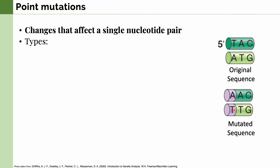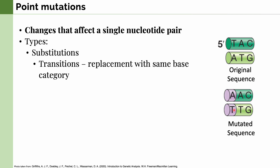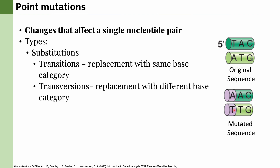There are two types of point mutations. The first ones are called substitutions, and we can further classify them into transitions and transversions. Transitions mean that the replacement nucleotide is of the same base category — so if a purine is in the original sequence, it is replaced by another purine. In transversions, the replacement is done with a different base category, so a purine is replaced by a pyrimidine. For the full list of pyrimidines and purines, please check out the previous video on our channel.